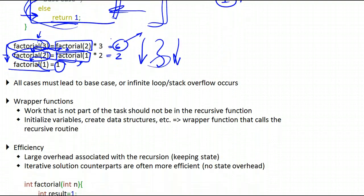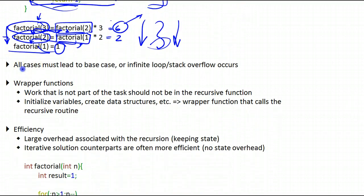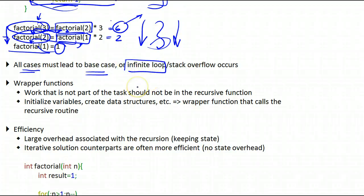Now there are a few things we have to keep in mind. All cases must lead to a base case. If we have a situation where it would go on in a loop forever and we did not have a base case, or the recursive case was faulty and did not lead to the base case, then we would be stuck in an infinite loop — just calls to the same function over and over again.